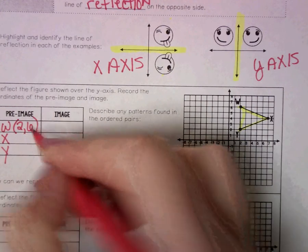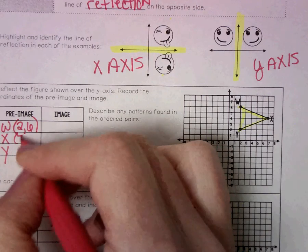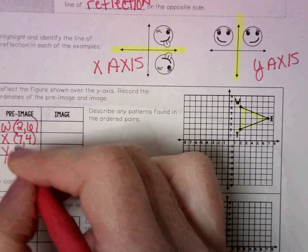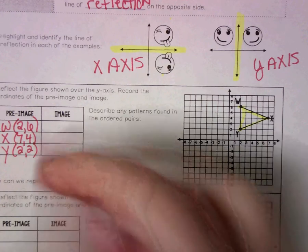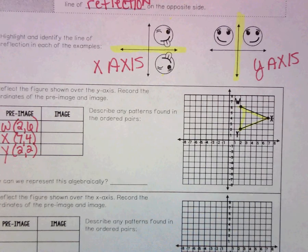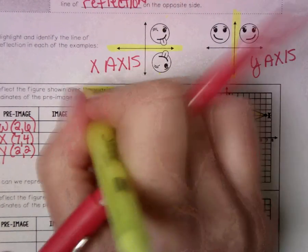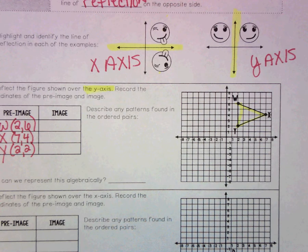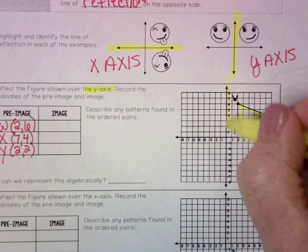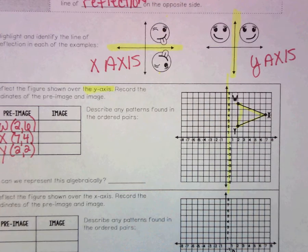It should be (2,6), (7,4), and (2,2). So they want us to reflect this over the y-axis. I'm going to highlight this too - this is my y-axis.